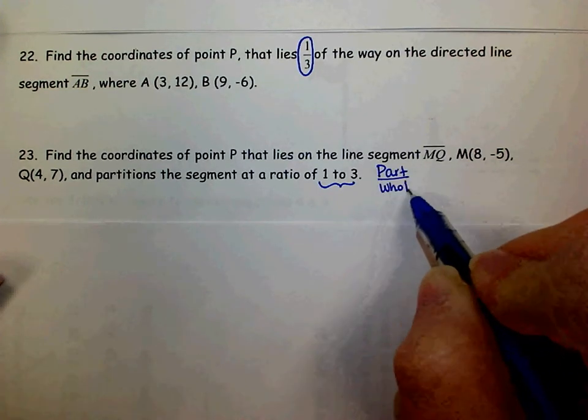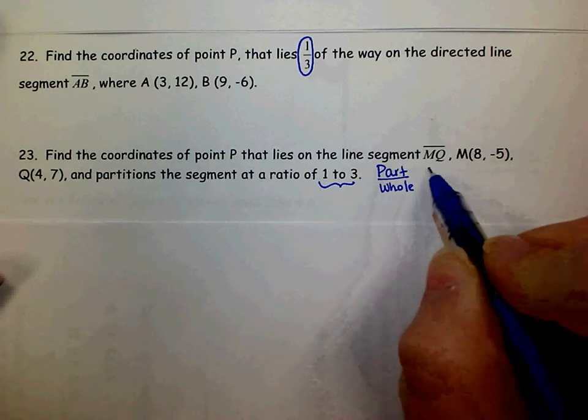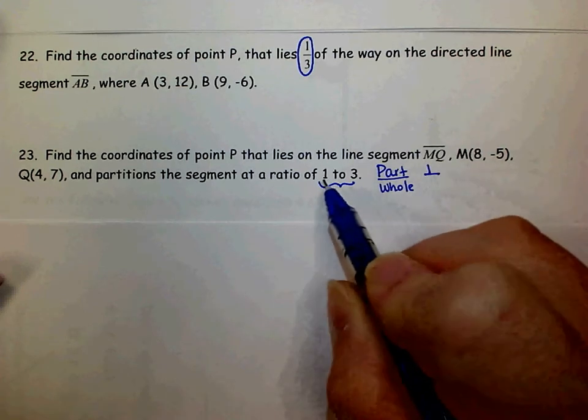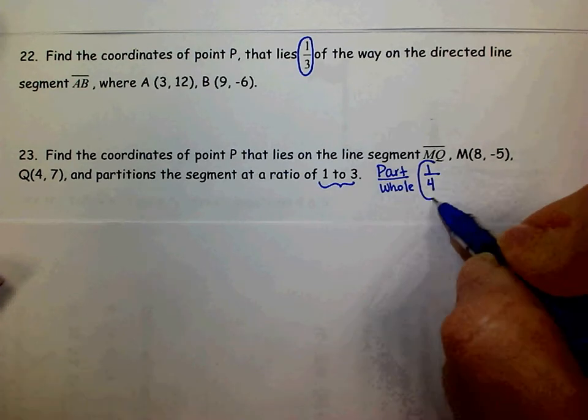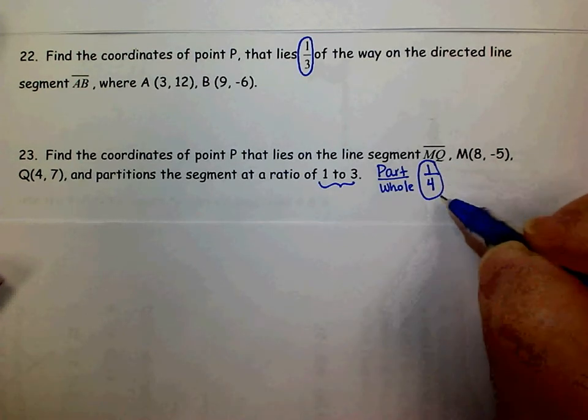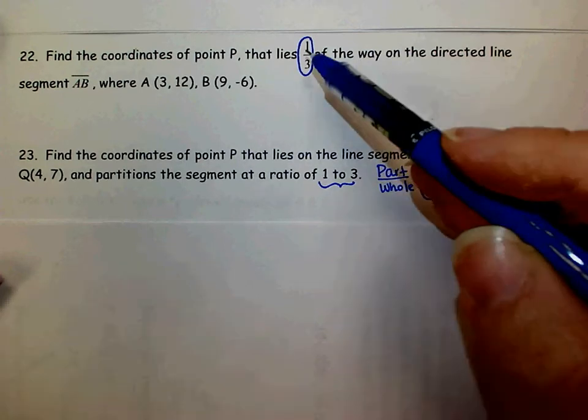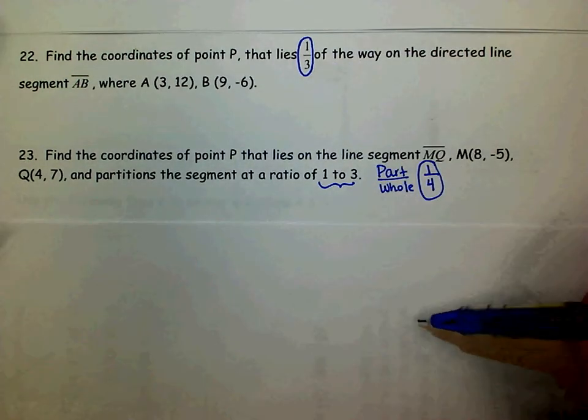So the 1 to 3 ratio, the 1 is the part, but the whole is adding those together. 1 plus 3 is 4. So on number 23, your fraction is 1 fourth, but on 22, your fraction is given.